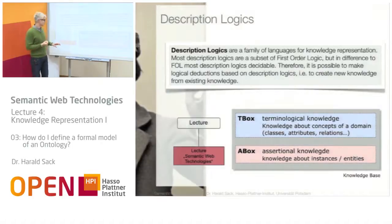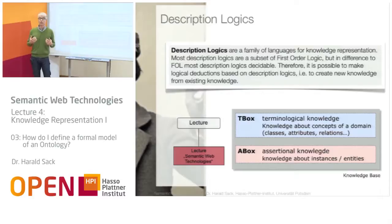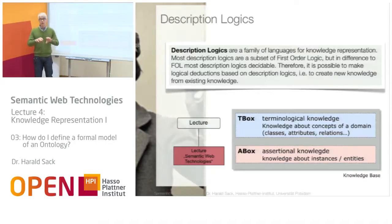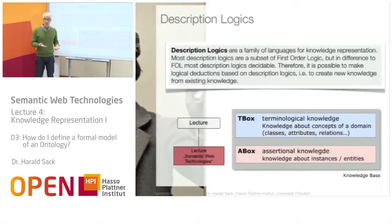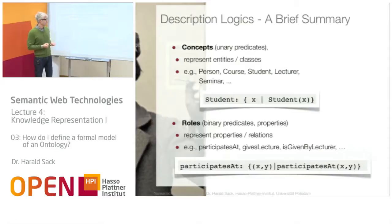In description logics, you talk about knowledge bases. You describe classes and individuals, and in a knowledge base you distinguish between terminological knowledge — knowledge about classes, concepts of the domain, attributes, and relations — and assertional knowledge — the knowledge about individuals, instances, and single entities. Both together form the knowledge base, which is the basis for making inferences, deductions, and calculations.